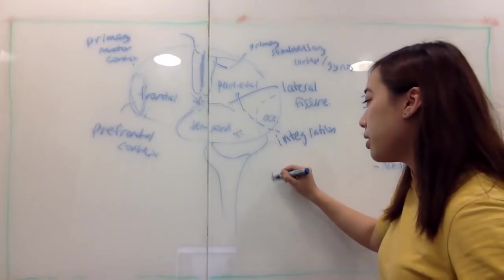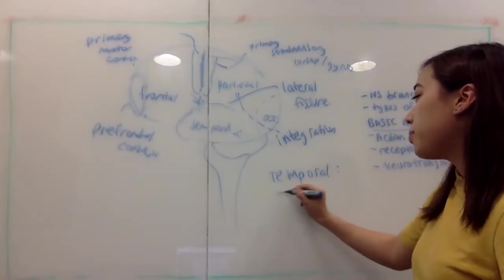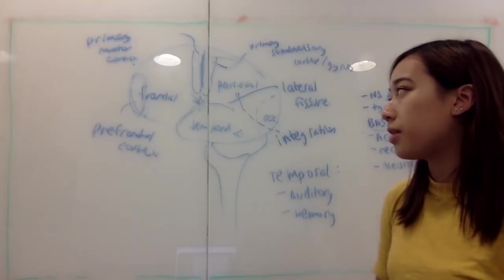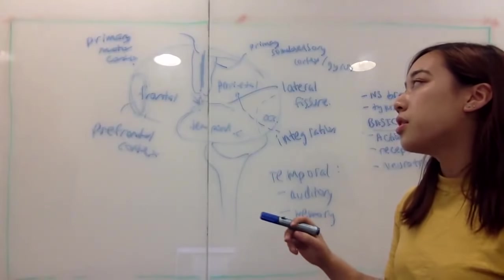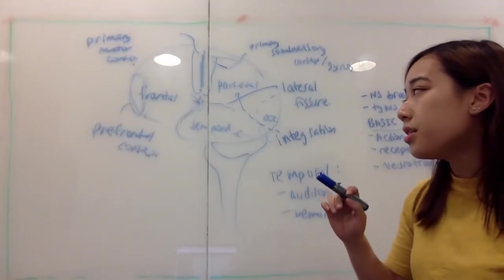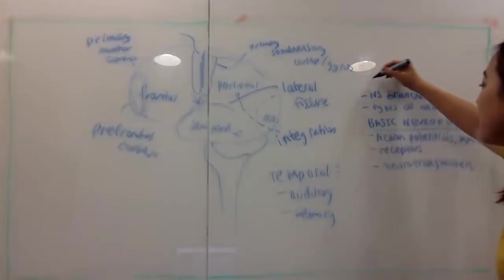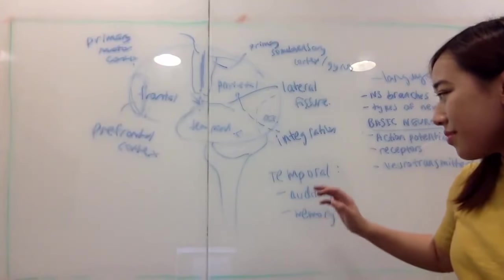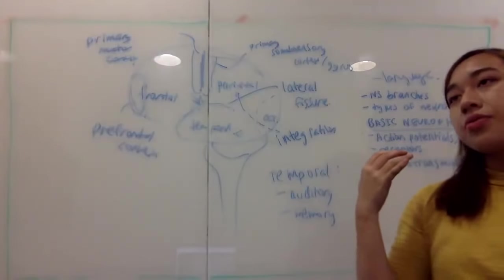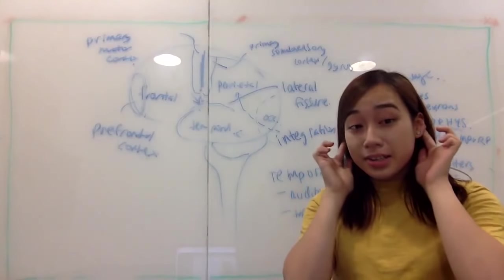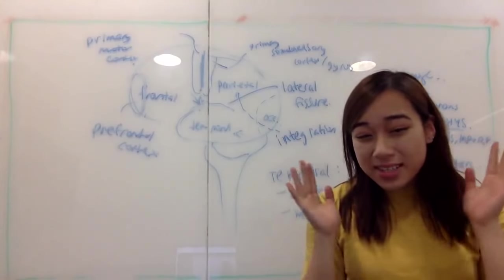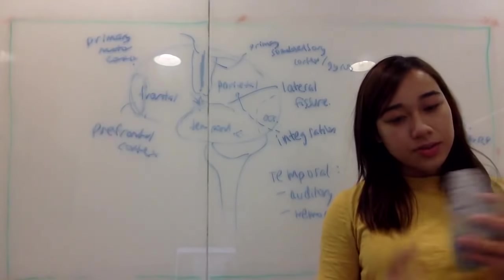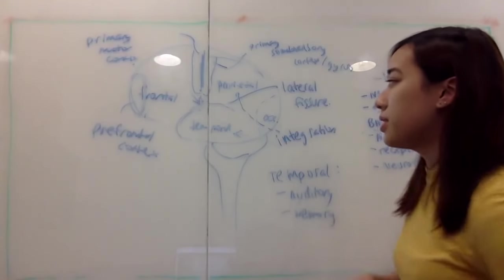Temporal lobe: auditory function and memory. The reason it's involved in auditory function is easy to remember — your temporal lobe is on the side of your head, right where your ears are. And it's also involved in memory because your hippocampus is located inside your temporal lobe. I'll go into more detail about language areas after I go through these basic things.